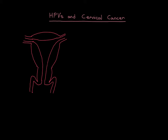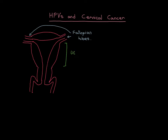Let me label this up. These are the fallopian tubes, which lead from the ovaries to the uterus — this is the left fallopian tube and this is the right fallopian tube. This portion here in green is the uterus, or the womb.